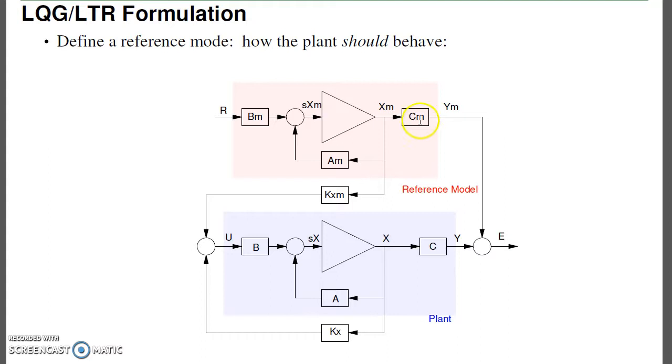I'll then take the difference between the two. That's the error. What I want to do is come up with my full state feedback gains - find the feedback gains times my reference model and the feedback gains times my state such that I force the error to zero.